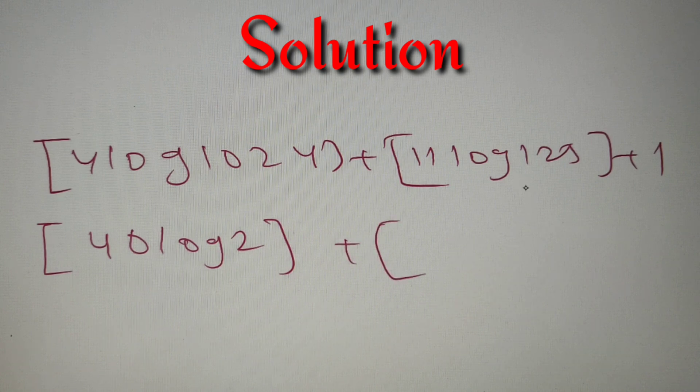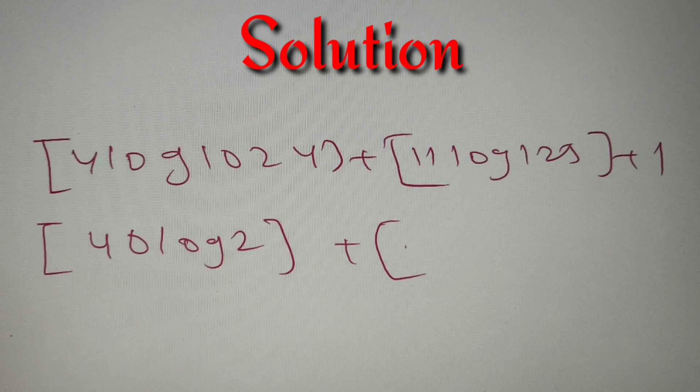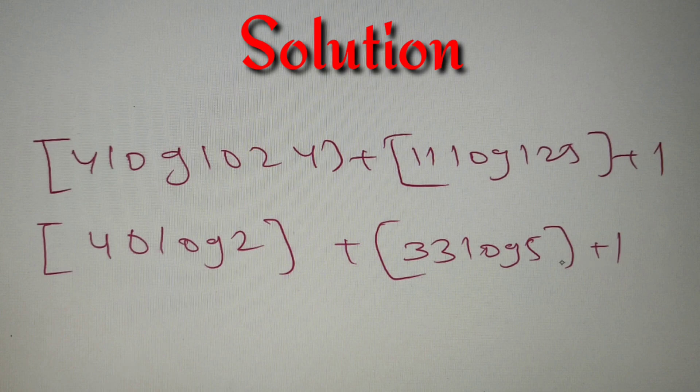And log 125 can be written as log 5 cube, and we can also write it as 3 log 5, so we eventually get 33 log 5 in the greatest integer value, and then we'll have to add 1 to get our final result.